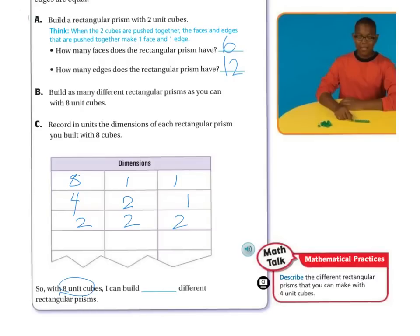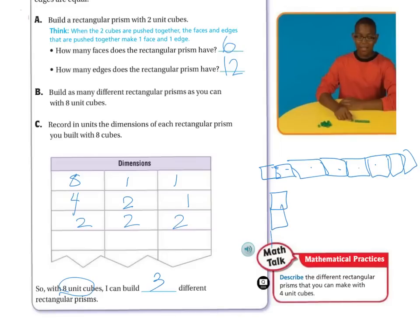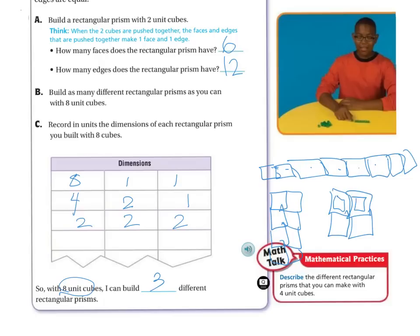With eight unit cubes, you should be able to build three different rectangular prisms. You could have your eight just lined up — eight by one by one. Or you could do four cubes and make it two deep — that's the four by two by one. Or you can do two by two by two. So this is the two by two by two, this is the eight by one by one, and this is the four by two by one.